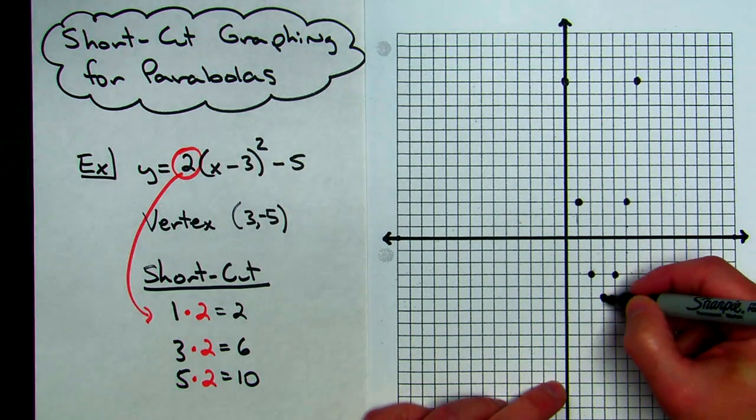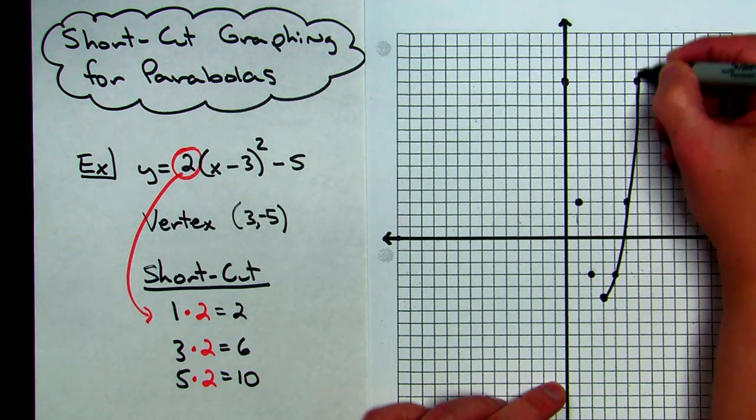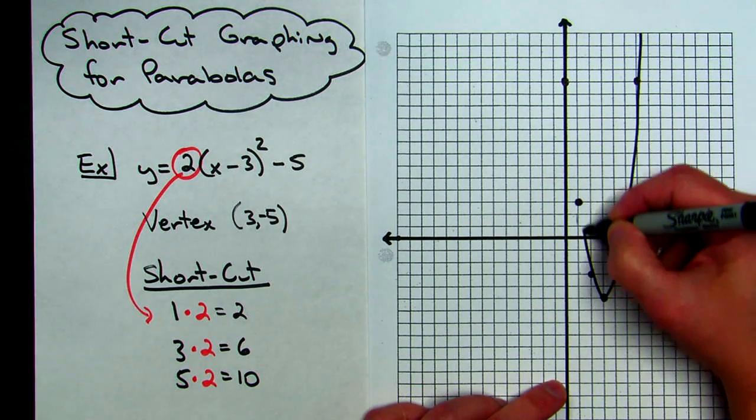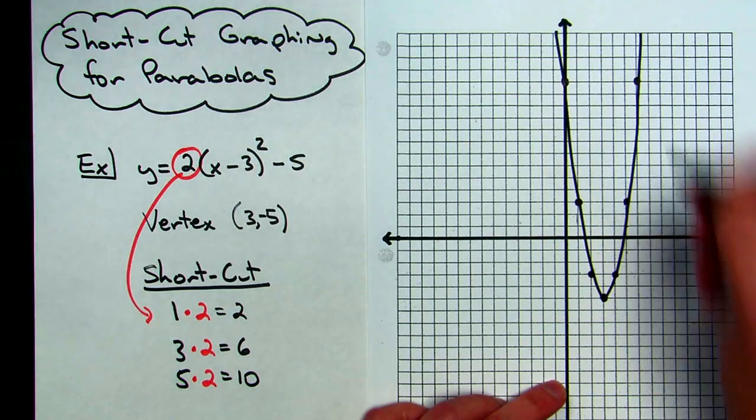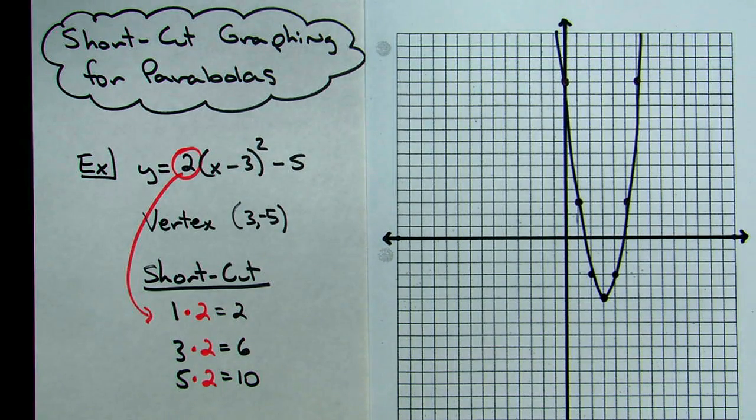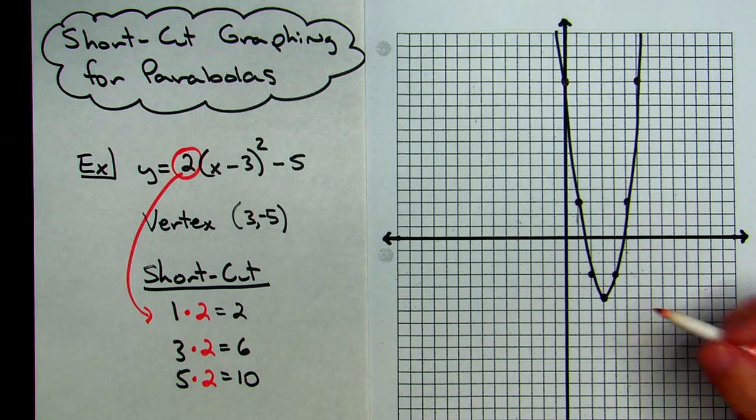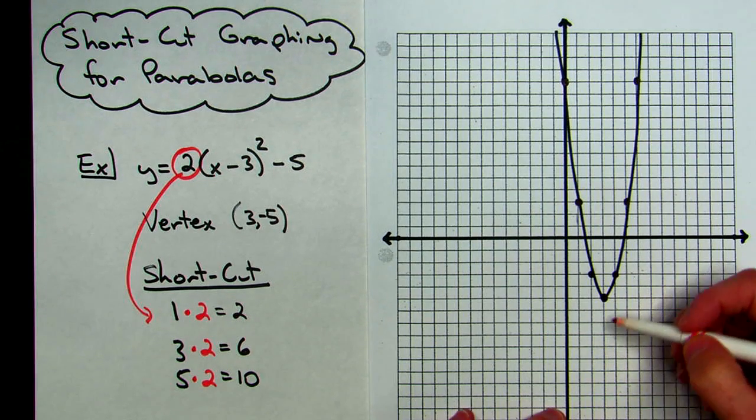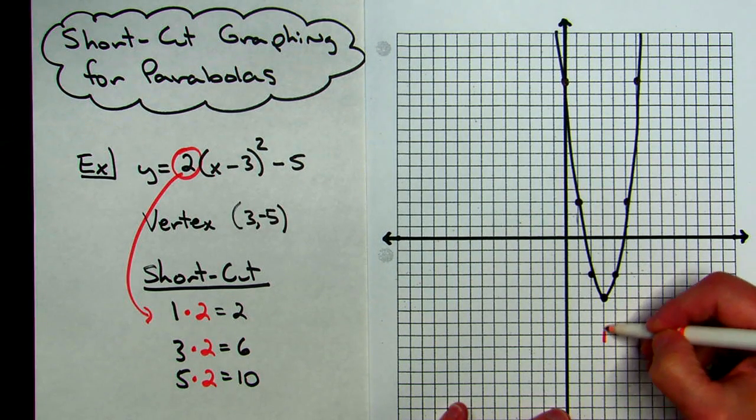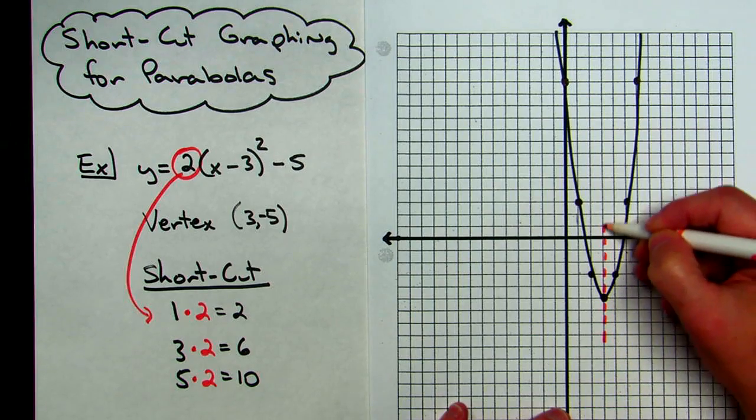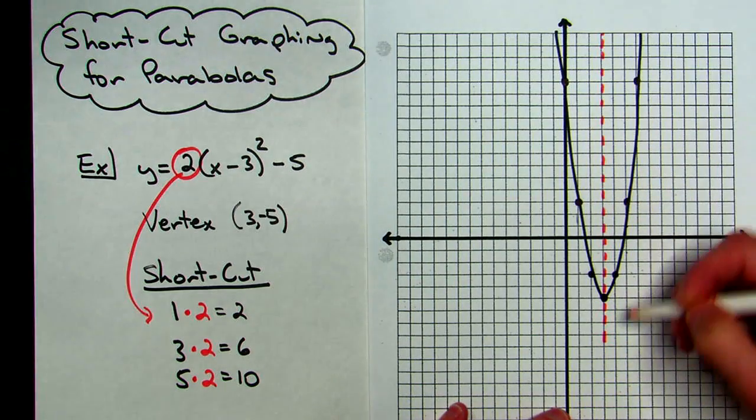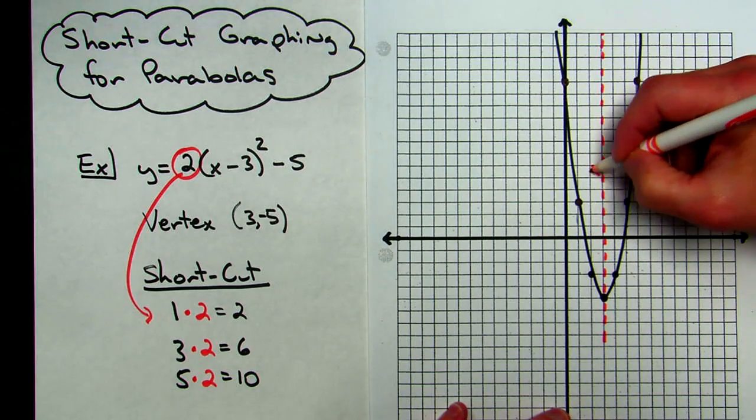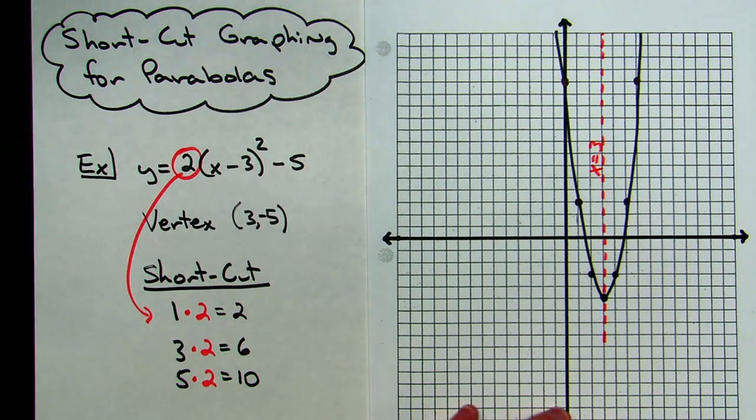Very quick method for being able to get through some shortcut graphing on this parabola. Saves you from having to create an entire x, y table every time when you want an accurate graph. If you want to be a little more precise, you can put that axis of symmetry in, and we know that that's a vertical line with the equation x equals 3. Shortcut graphing, you always use 1, 3, 5, you always multiply by the leading coefficient.